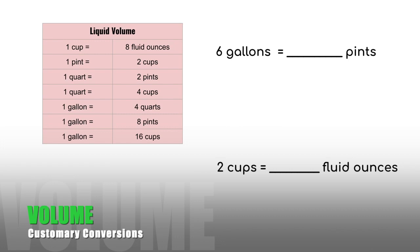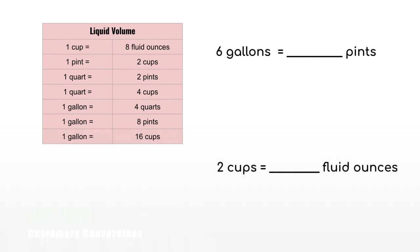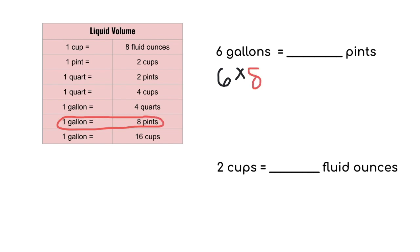Now we'll do some problems with liquid volume. The liquid volume chart will show you all of the conversions. We are starting with six gallons, so our first number will be six. We're multiplying because we're going from a larger unit of gallons to a smaller unit of pints. We look in the chart to find the conversion that has gallons and pints together — one gallon equals eight pints — so we multiply by eight. Six times eight, we get 48. So six gallons equals 48 pints.